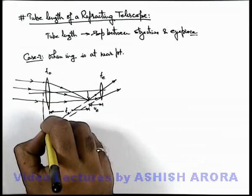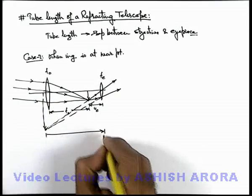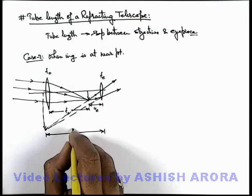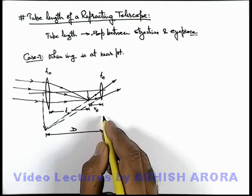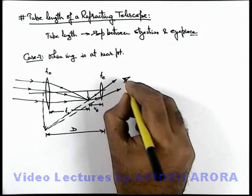...at a point which is located at a distance equal to the near point of the observer's eye, which is very close to the eyepiece.